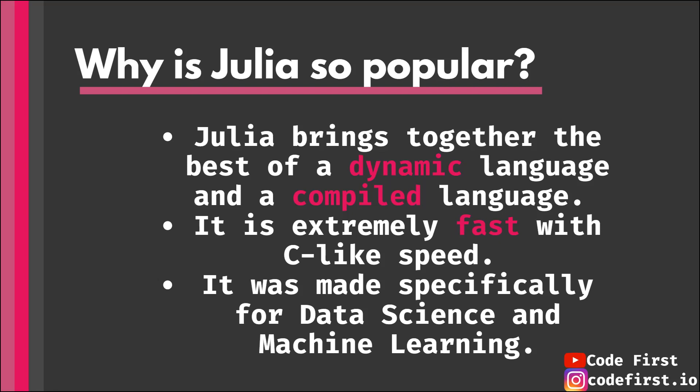The creators said they were tired of the trade-offs — tired of having a language like Python that's so powerful but interpreted and therefore slow, and tired of having another language with a strength and a weakness. So they tried to bring all the strengths of the different languages in data science and put them all together in one. It is extremely fast — we're talking C-like speed. For a high level language, it's extremely fast, and it was specifically created for data science and machine learning, unlike Python, which was a general purpose language used for web development, mobile development, desktop apps, and more.